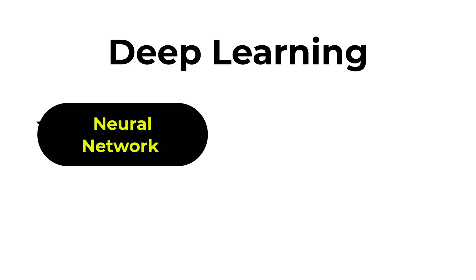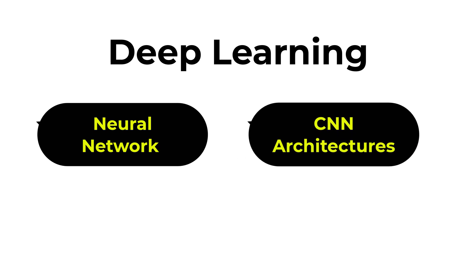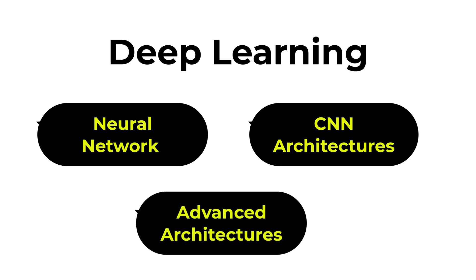You also need to be familiar with CNN architectures such as ResNet, VGG, and Inception, as well as transfer learning and fine-tuning techniques to understand computer vision models under the hood. Plus, you should understand advanced architectures such as transformers for vision, vision-language models, and self-supervised learning.